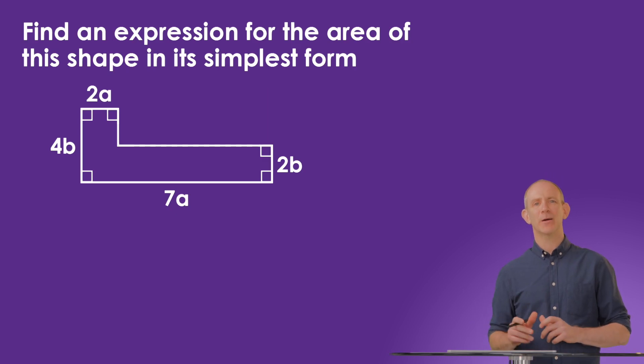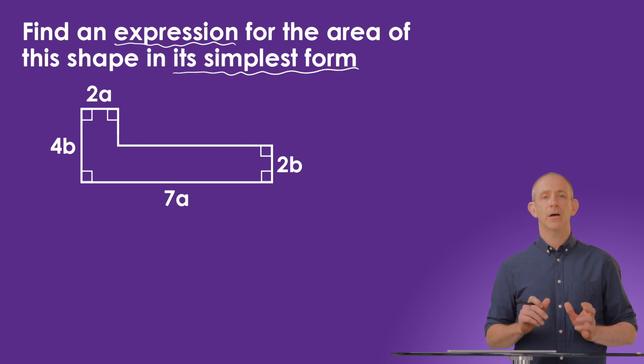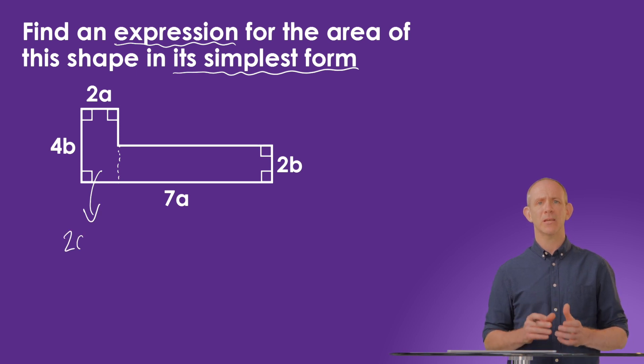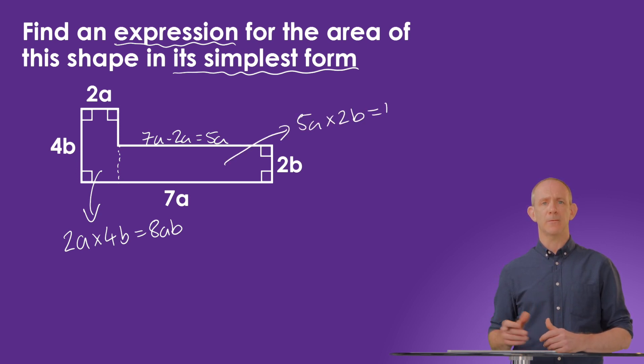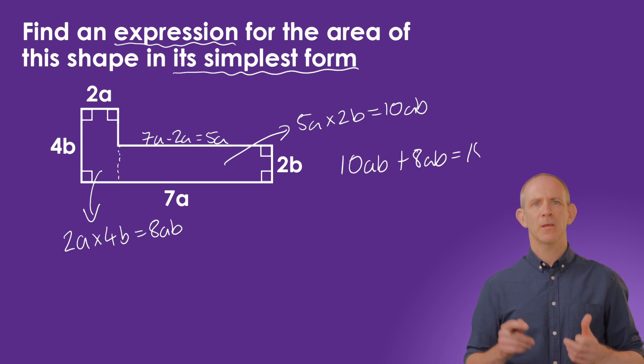In this question, we're given a compound shape with measurements given to us in terms containing variables. And we're asked to give the area as an expression in its simplest form. Again, as we have done with the other compound shapes, I'm going to cut it into shapes that I can easily calculate. So I'm going to cut this down here to create two rectangles and calculate each area independently. The one to the left is 2a times 4b, which equals 8ab. We need to calculate the length of this top side, which is 7a take away 2a, which will give us a length of 5a. We can then do 5a times 2b to get 10ab. We can't evaluate it because we don't know what a and b represent, but we've shown it in its simplest form to calculate it once we know what those variables do stand for.